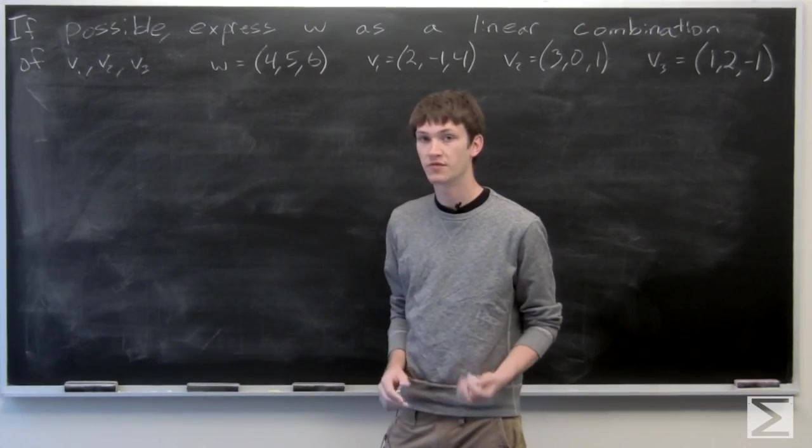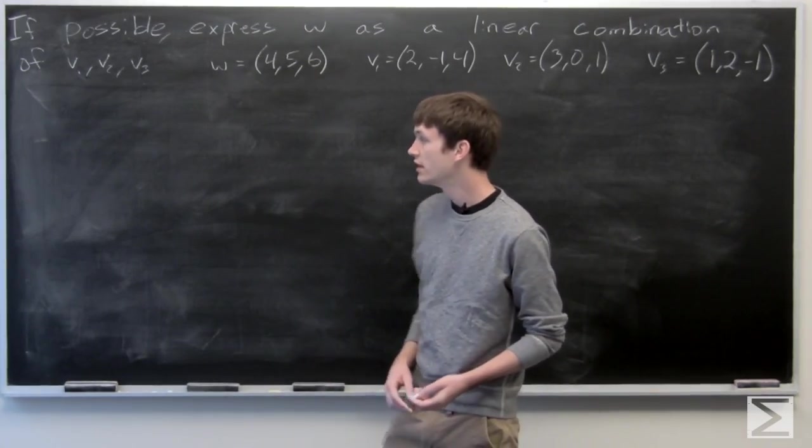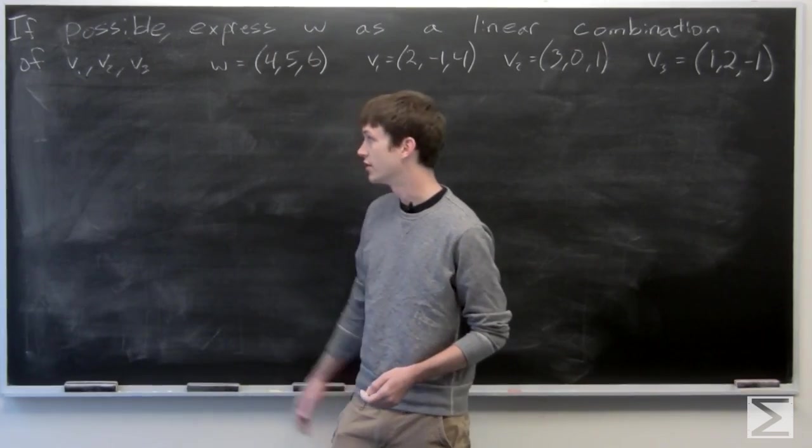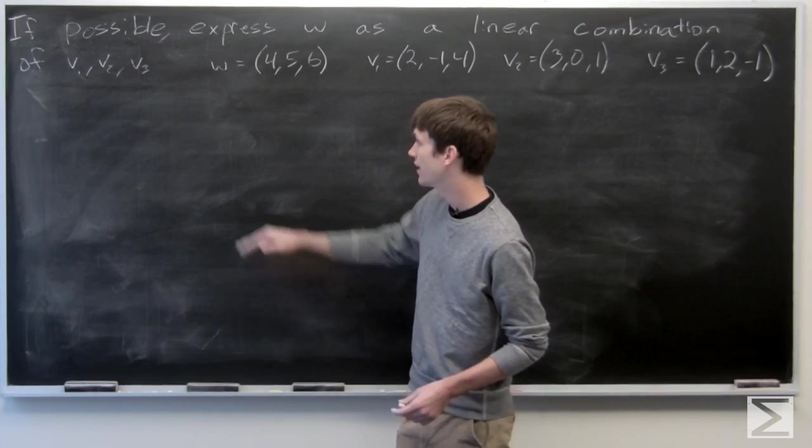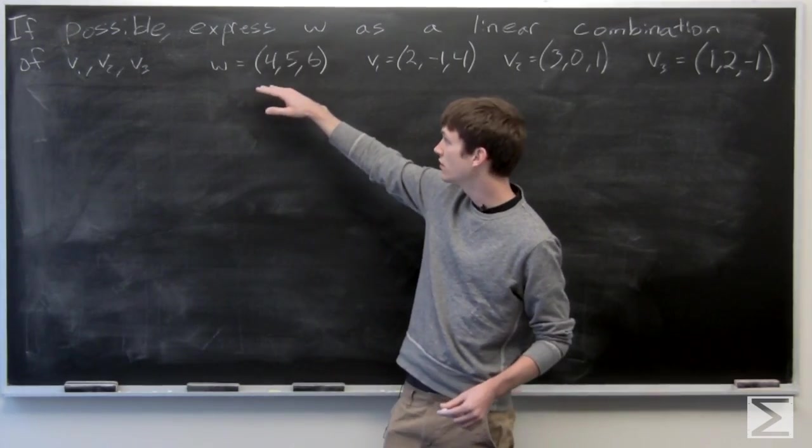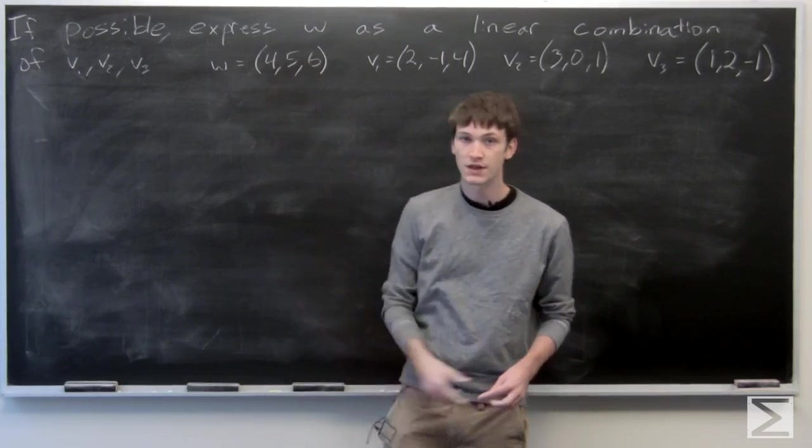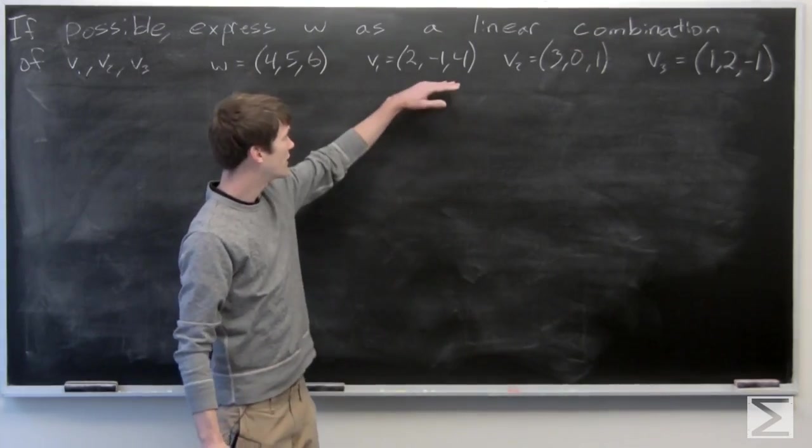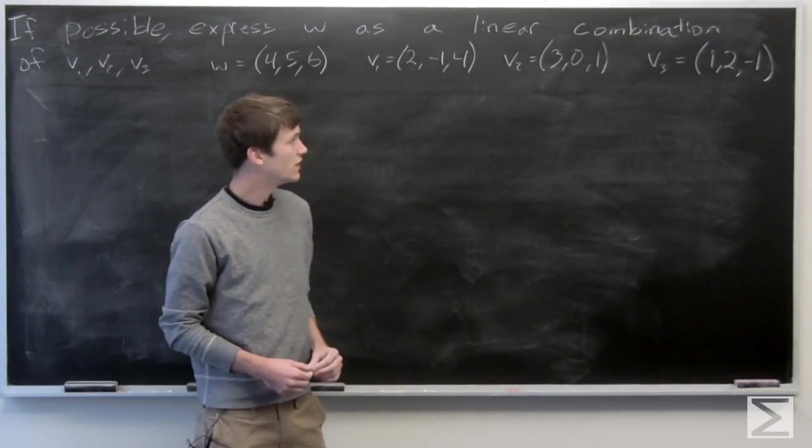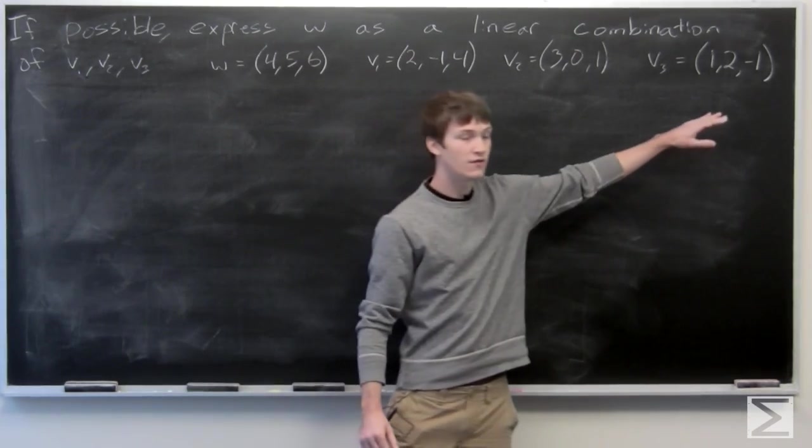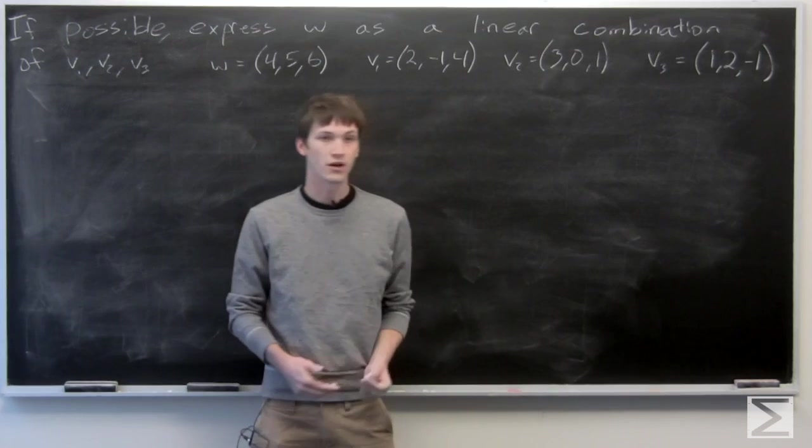Okay, in this problem we're asked to, if possible, express w as a linear combination of v1, v2, and v3. And we're given that w is (4, 5, 6), v1 is (2, -1, 4), v2 is (3, 0, 1), and v3 is (1, 2, -1).